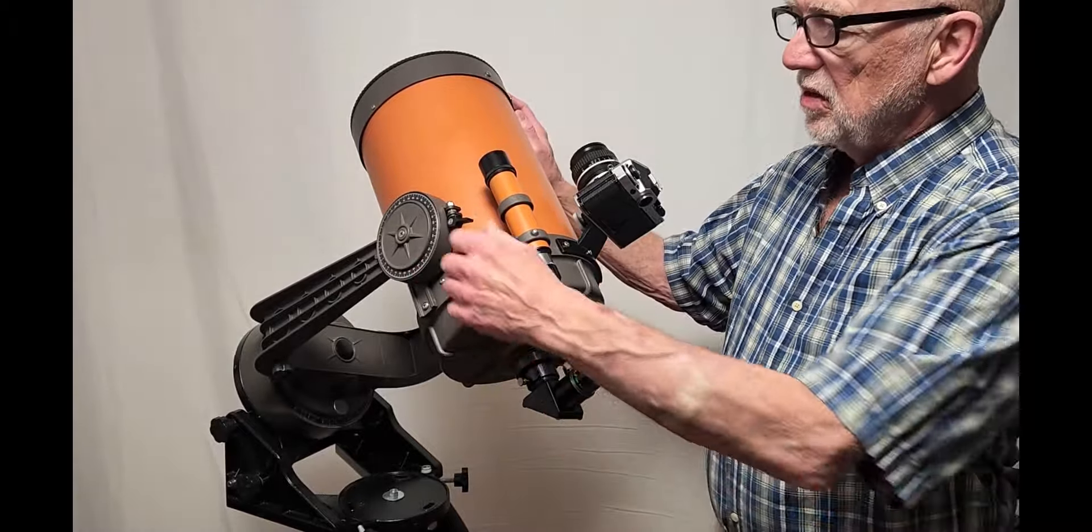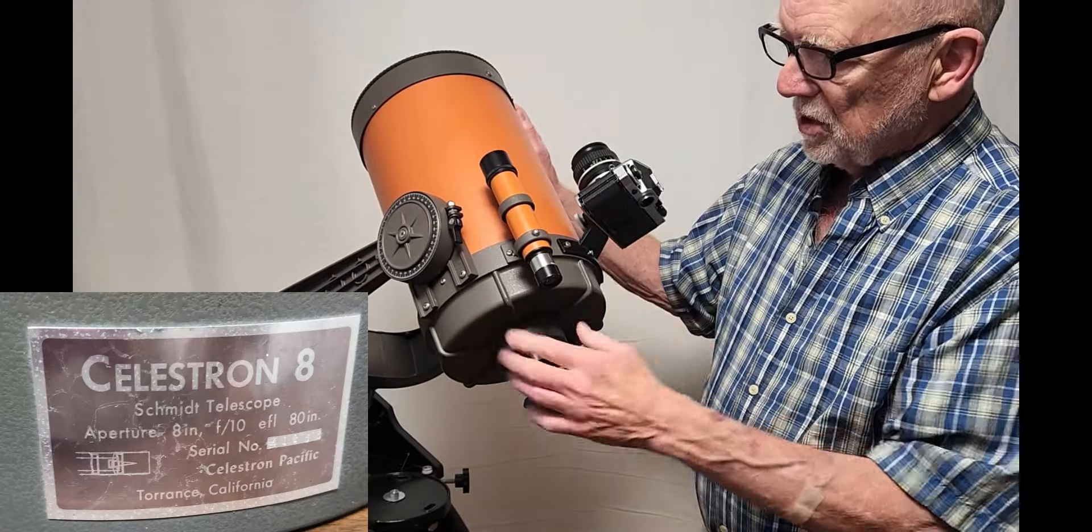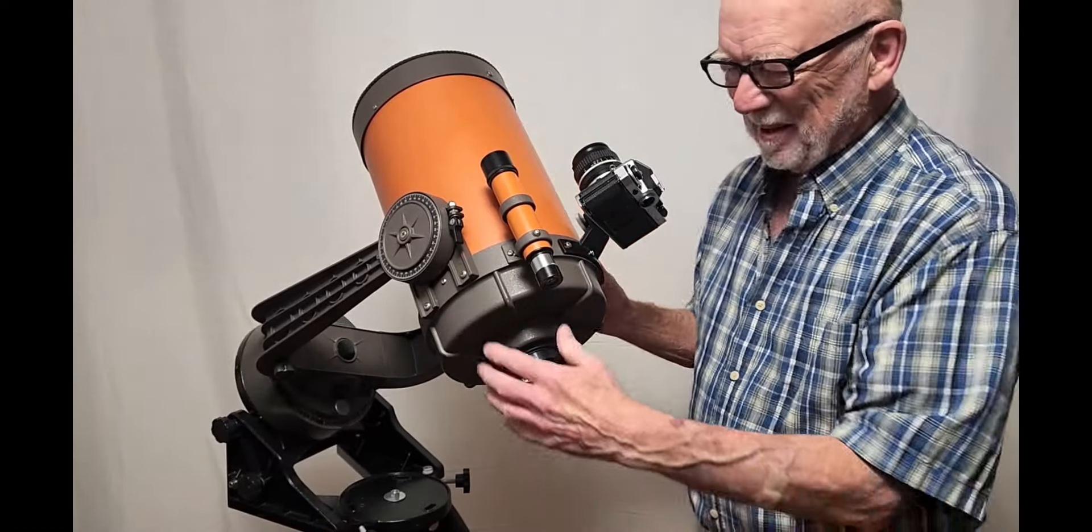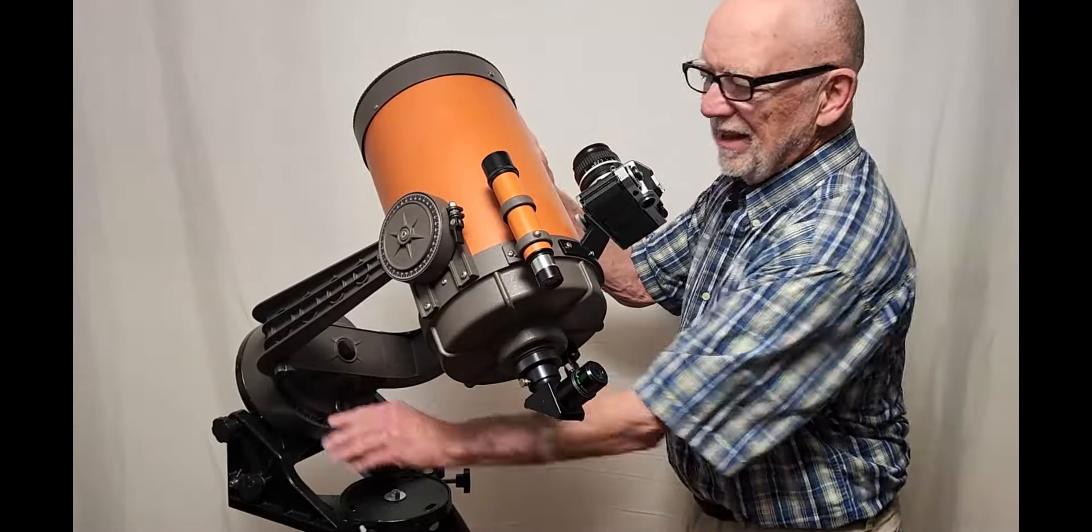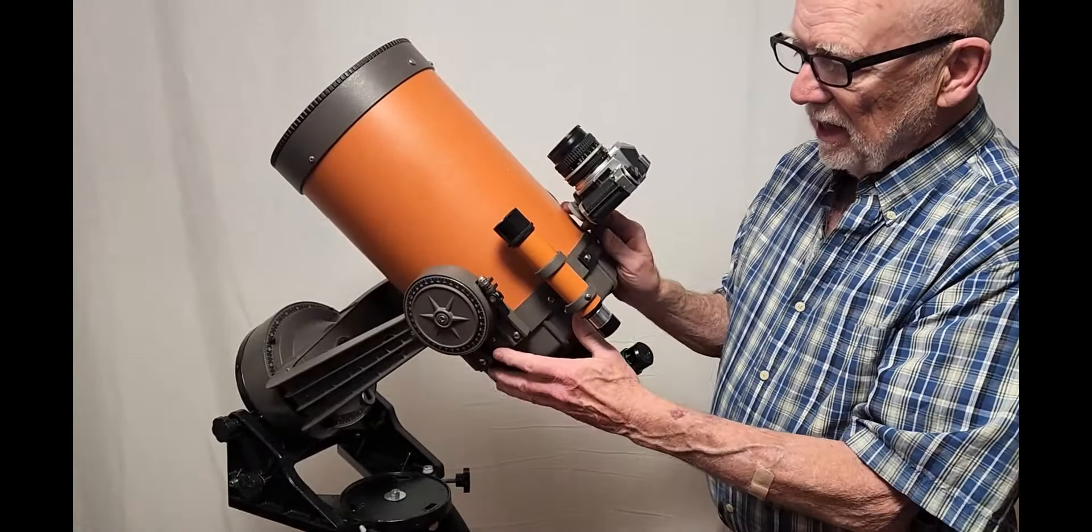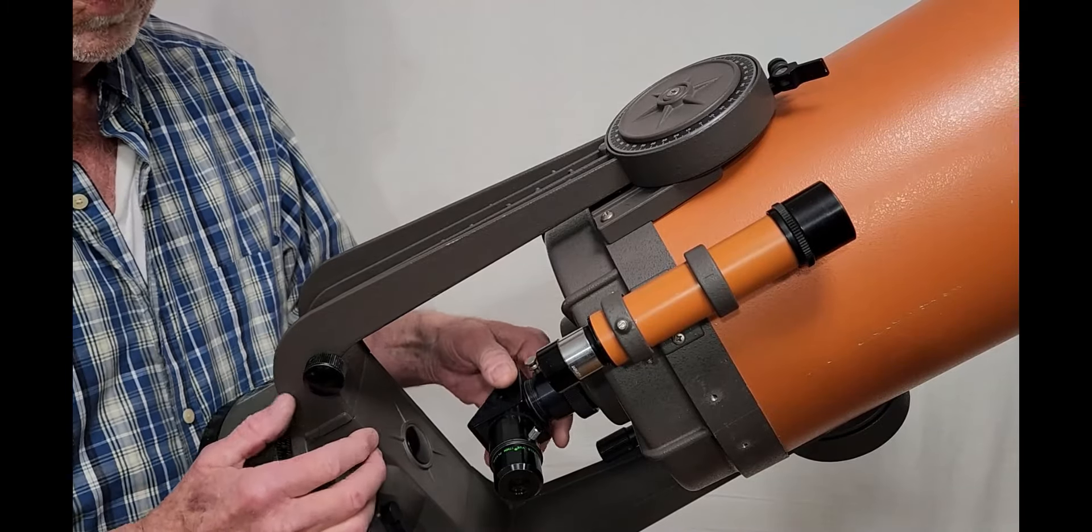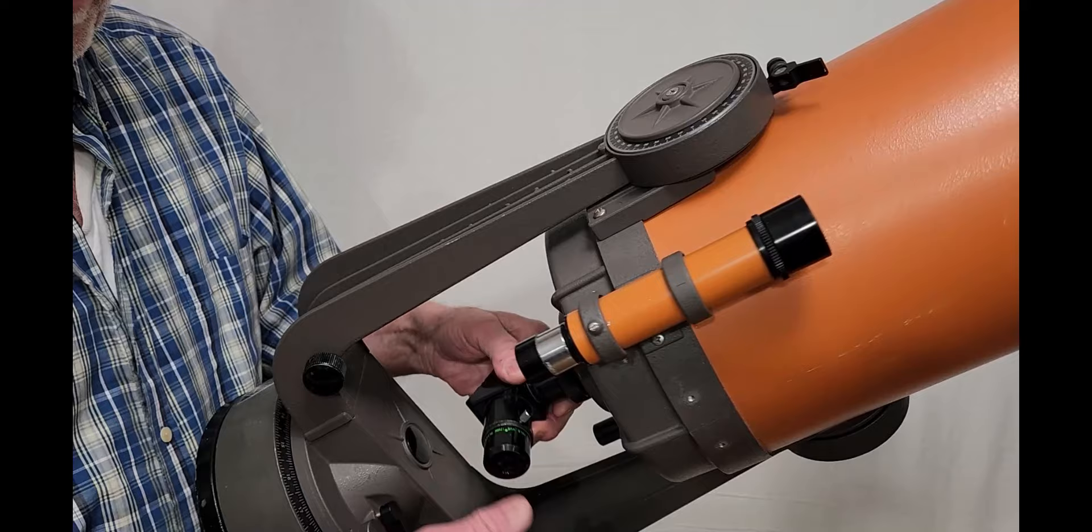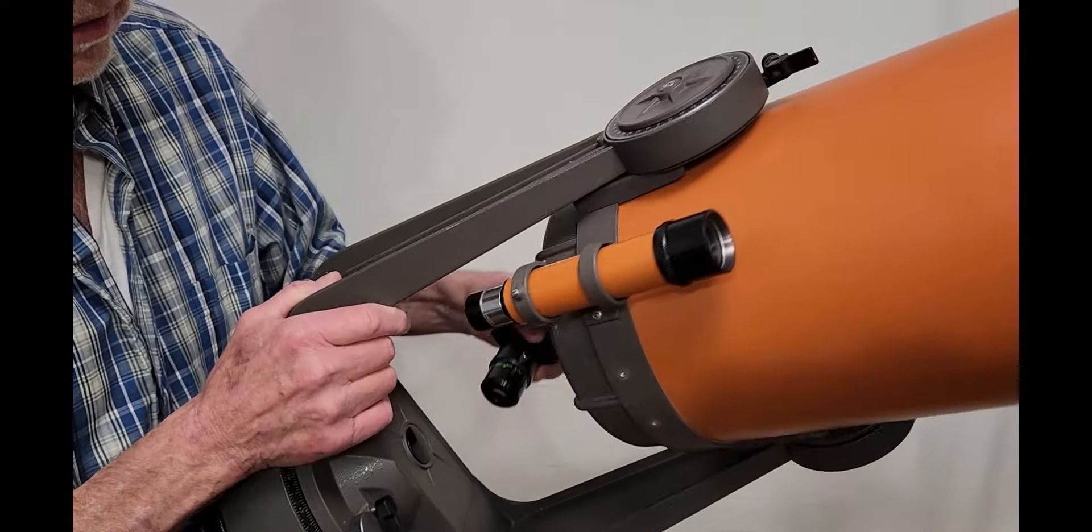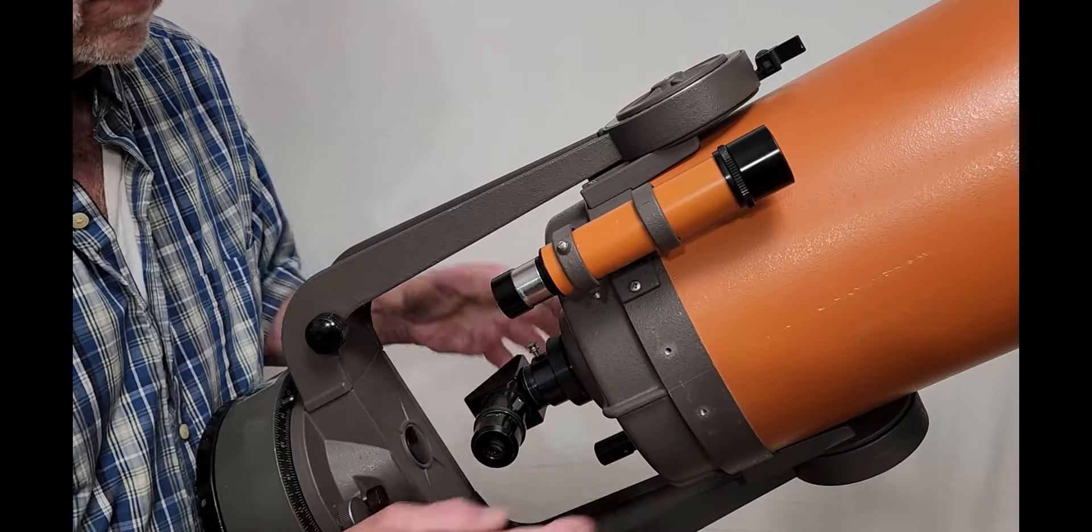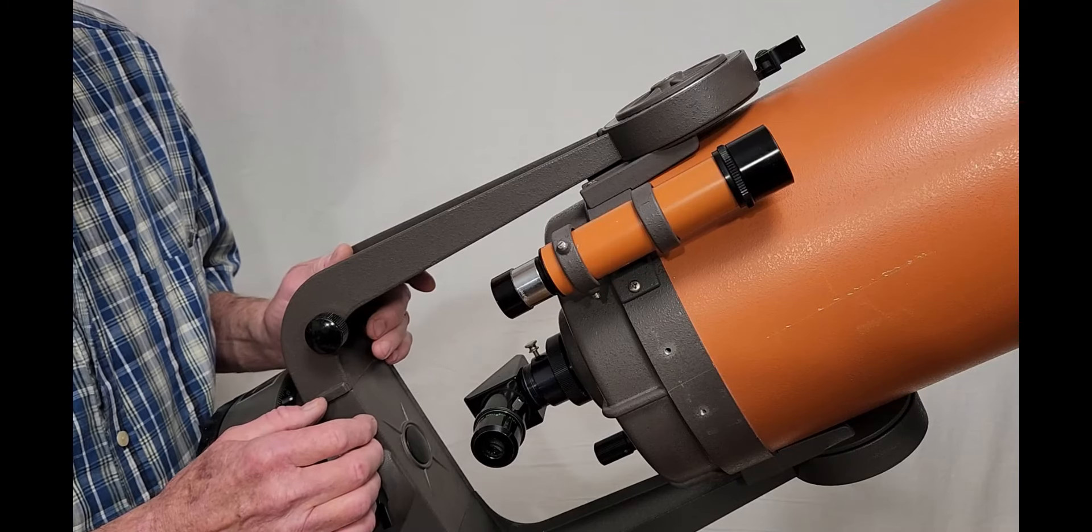This telescope is 1978 vintage and in those days they thought it was really cool to put a 6x30 finder on a big scope like this. It works okay for finding things like the moon, Jupiter. It's not bad. The little 6x30 finder here is really almost inadequate for the scope but it does have the advantage that it allows it to swing between the arms like so. So for clearance issues you can leave the finder attached and it won't run into the fork arms and it also makes it possible to put it into a trunk.